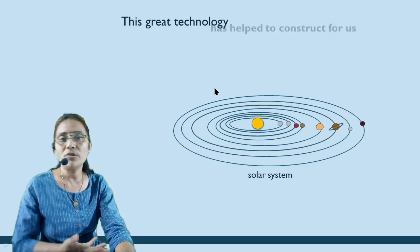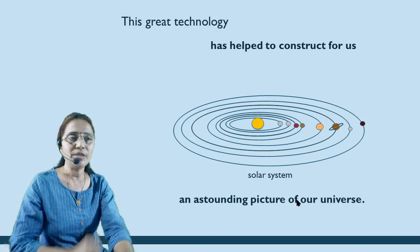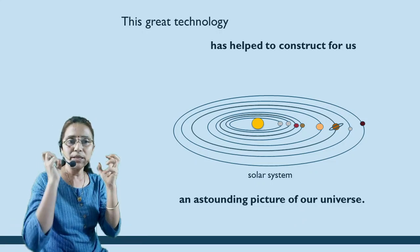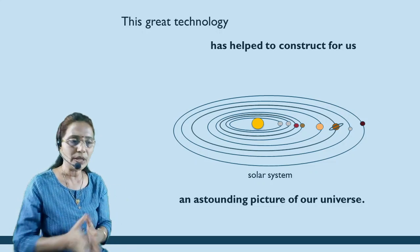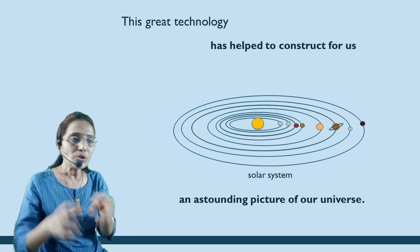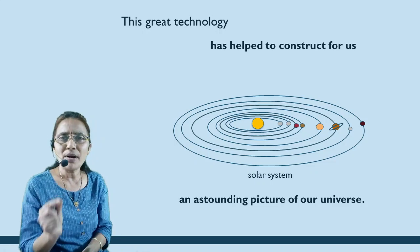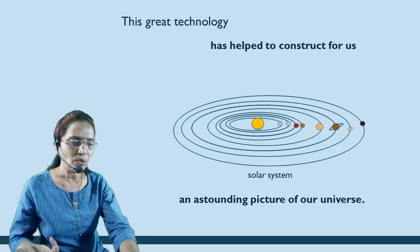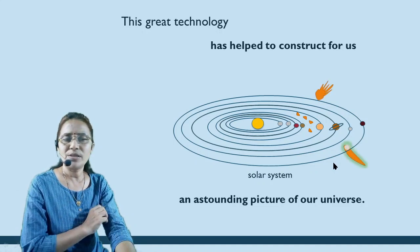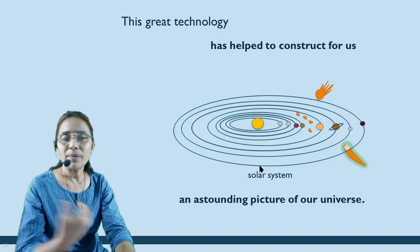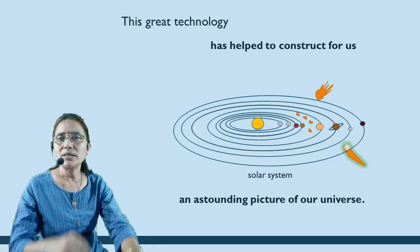This great technology has helped us to construct an astronomical picture of our universe. In the universe there are many galaxies. The name of our galaxy is the Milky Way. Our solar system is situated within the Milky Way, meaning the solar system is a tiny part of this galaxy. In the solar system we have the sun, planets, asteroids, and comets. This is how we can imagine and construct an understanding of the universe.